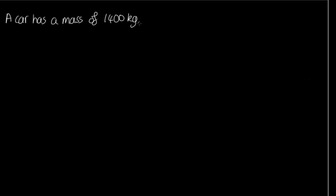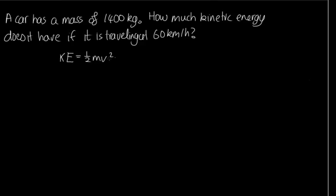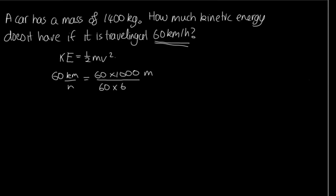The question is: a car has a mass of 1,400 kilograms. How much kinetic energy does it have if it's travelling at 60 kilometres per hour? We'll use the formula KE = ½mv². The velocity must be in metres per second, so we need to convert 60 kilometres per hour: 60 × 1000 metres per hour, divided by 60 × 60 seconds. These cancel, giving us 16.67 metres per second.